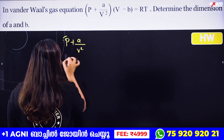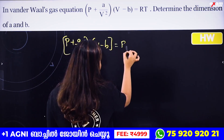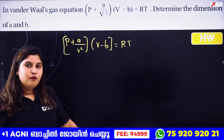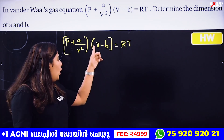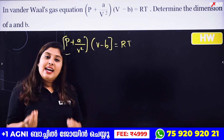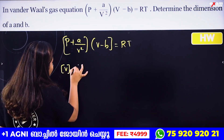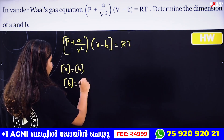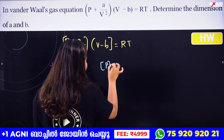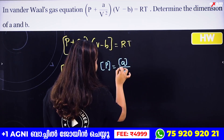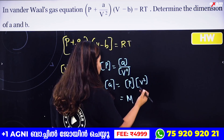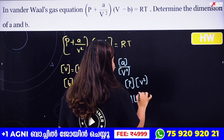The equation is (P + a/V²)(V − b) = RT. By the principle of homogeneity, terms added together must have the same dimension. So a/V² must have the same dimension as pressure P. Therefore the dimension of a equals the dimension of P times the dimension of V², and V has dimension L³.